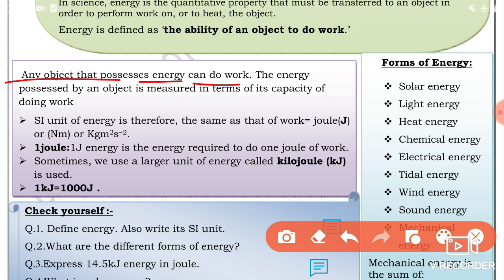Any object that possesses energy can do work. The energy possessed by an object is measured in terms of its capacity of doing work. The SI unit of energy is therefore the same as that of work: joule (J) or Newton meter or kilogram meter squared per second squared.